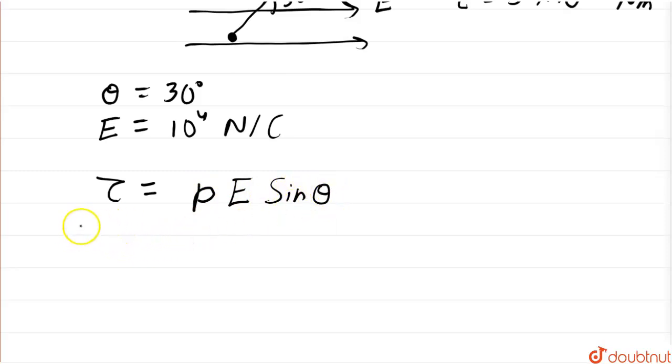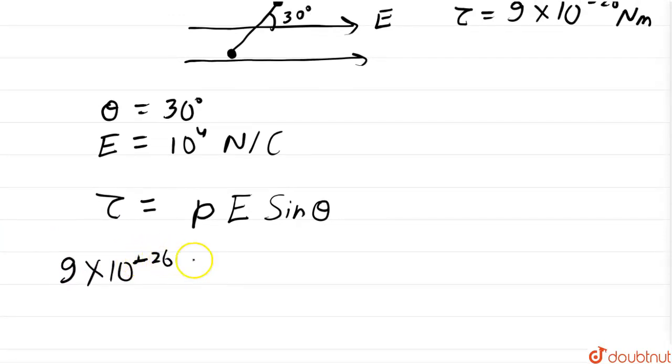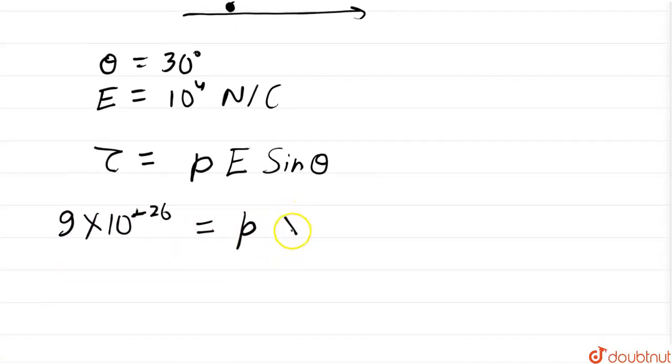So, substituting the values we get 9×10^(-26) equals p which we have to find out. E is 10^4 into sin of 30 degrees.